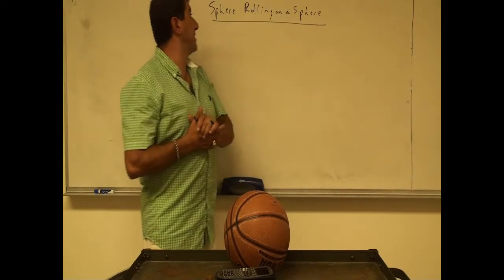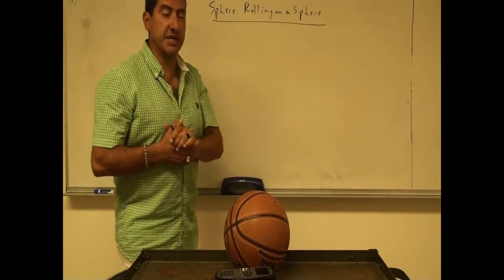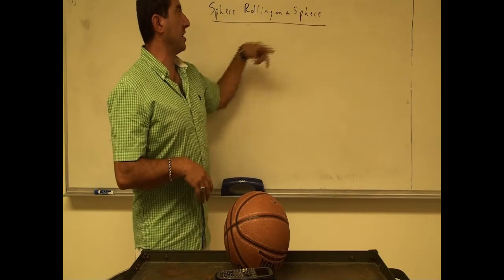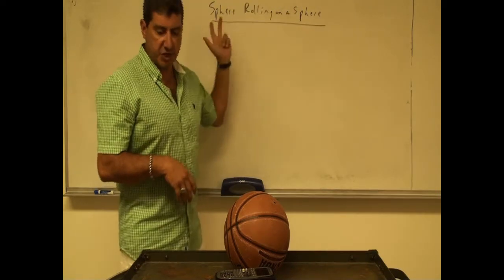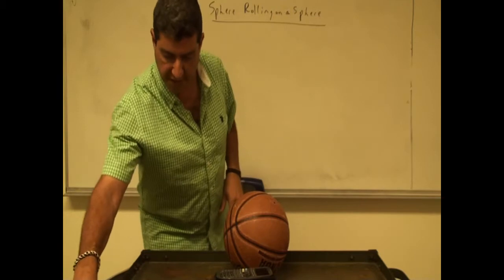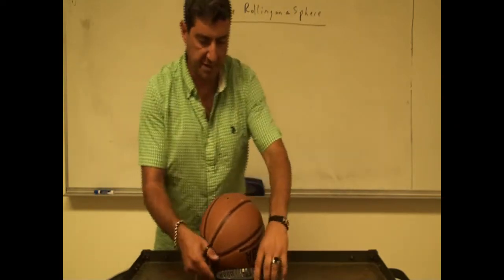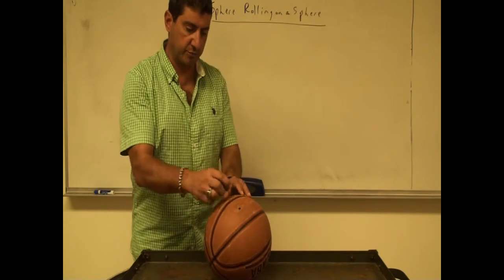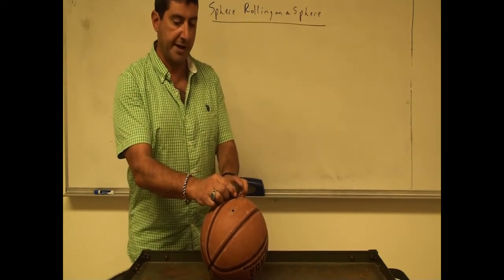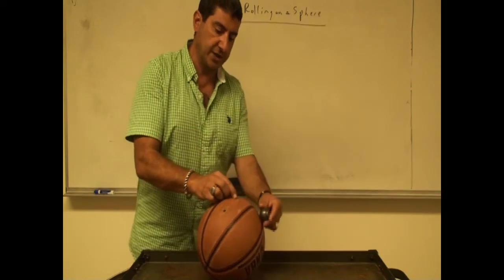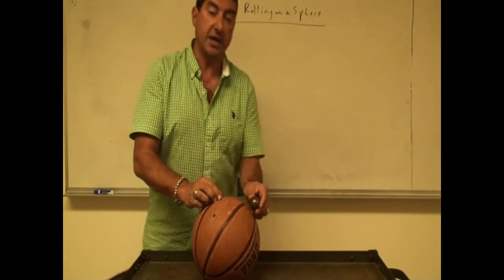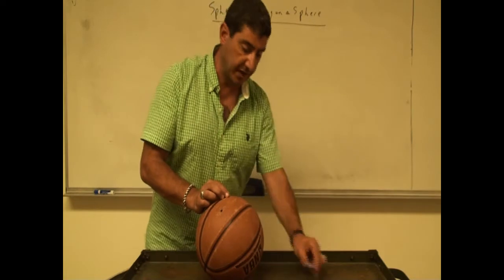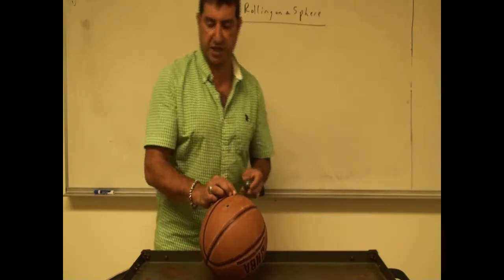A demonstration I'm calling sphere rolling on a sphere. Even though I've called it that, you can make a cylinder rolling on a sphere, or any kind of shape. What I'm going to do is start out a sphere on top of a ball — a cylindrical ball — start it somewhere, and then let it go. While it's rolling, it's going to start speeding up, and I want to find out at what angle it leaves the surface of the sphere and then goes on a projectile motion path.